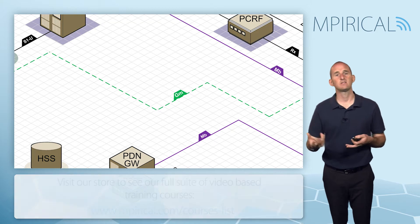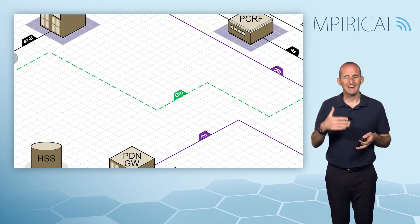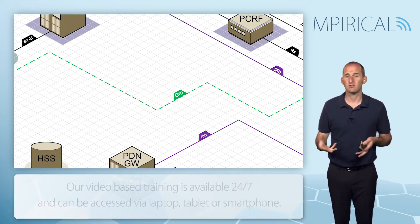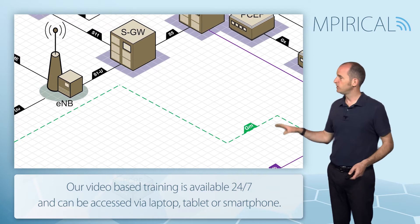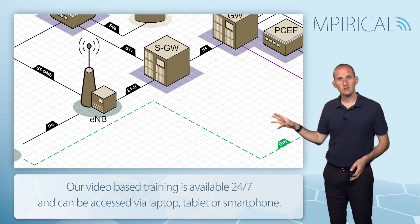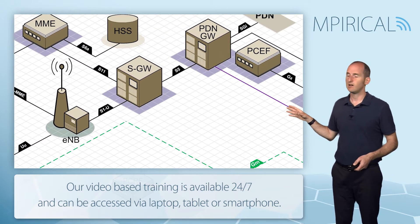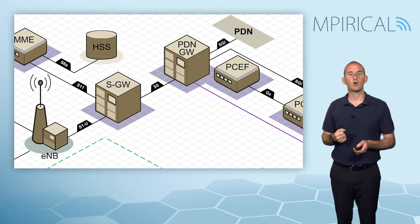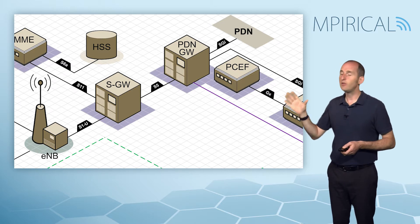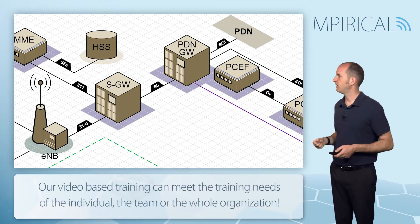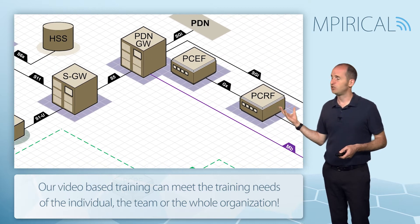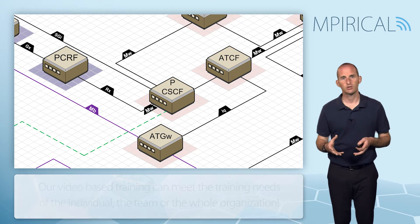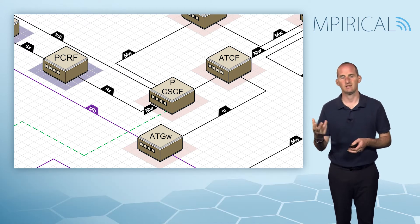The Gm reference point carries our SIP signaling, but remember that in actual fact it is comprised of our LTE architecture. You can see the eNodeB, the serving gateway, and the PDN gateway — this would be our calling party leg of the call. Beyond the PDN gateway, the next interface is the SGi interface, which connects us into our proxy call session control function, our first IMS network element.